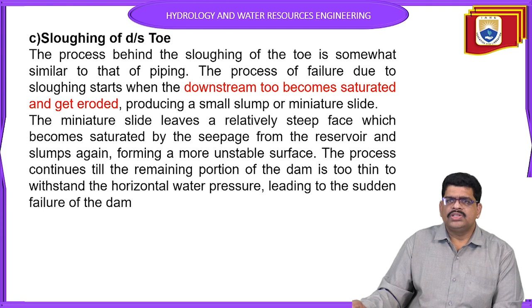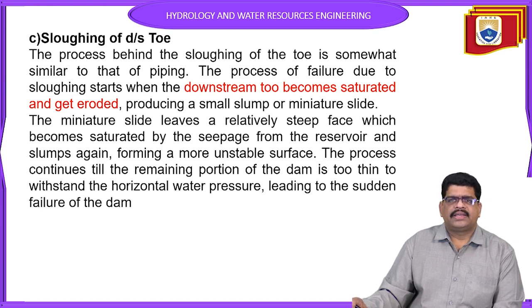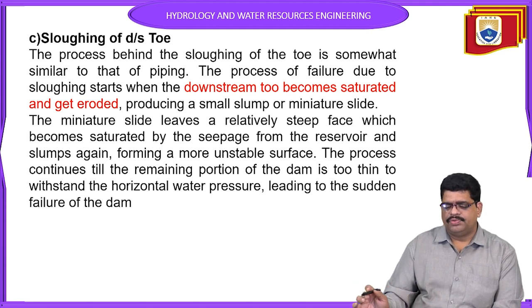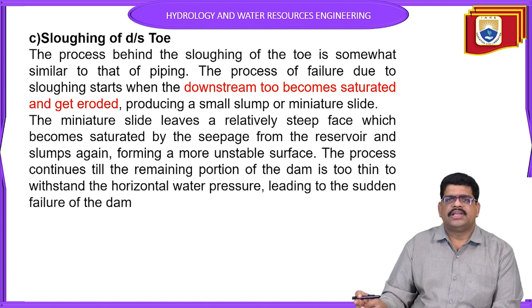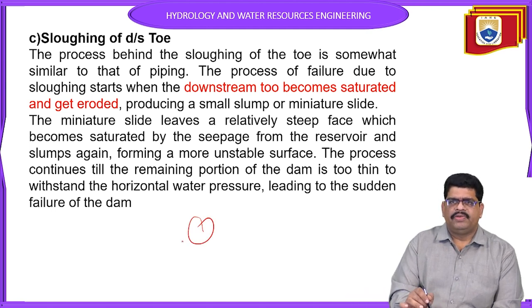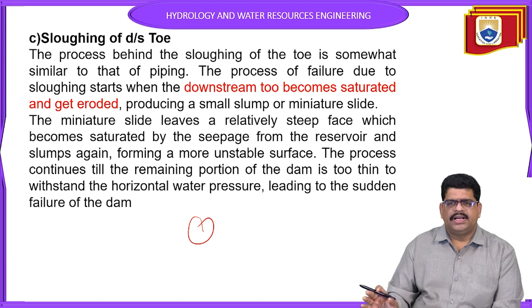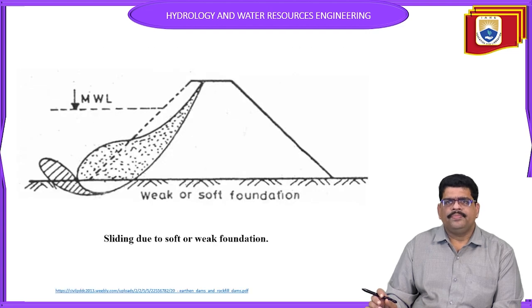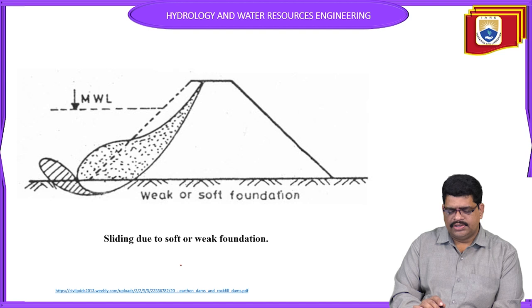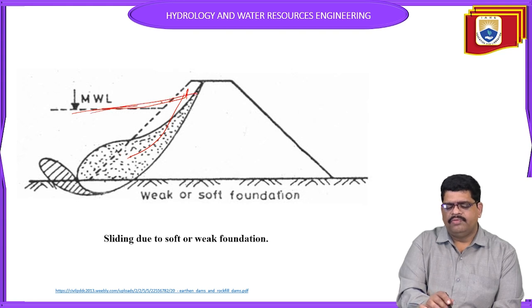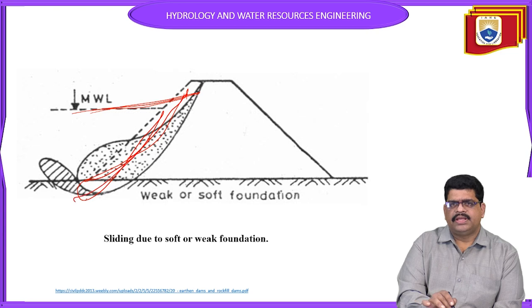The slogging of the toe: the process of failure due to slogging starts at the downstream side, which becomes saturated. Water is absorbed into the soil, causing saturation from the seepage line on the downstream side, which then gets eroded. This is also one of the failures due to soft and weak foundations. On the upstream side at maximum water level, draw-down reaction can also cause failures.